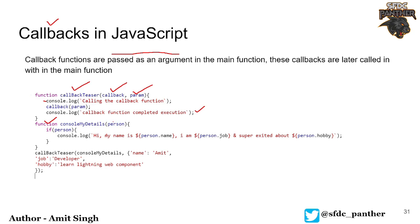This is our function which is saying 'console my details', and it has one parameter which can be a param or a person - the name can be anything you want. Then we say that if person - meaning if there is something inside the person variable - then do the console log with string interpolation: 'Hi, my name is whatever person.name, I am a whatever person.job, and super excited about whatever the hobby is.' This is basically an object, that's why we are using a person variable name with its properties.